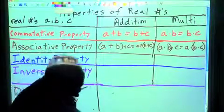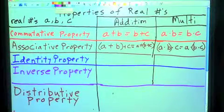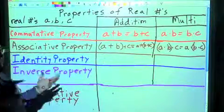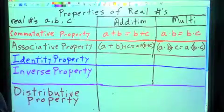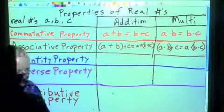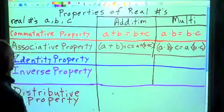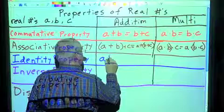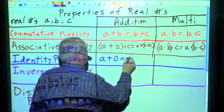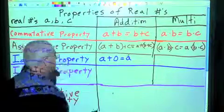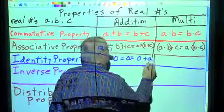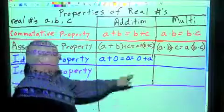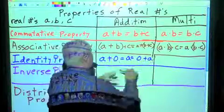Now the identity property. Identity means who are you? The identity property of addition says that for any real number A, there is a real number that I can add to it and get the same number. That simply means A plus 0 equals A. And by the commutative property, that's the same thing as saying 0 plus A equals A. There is a number I can add to A that will give me A.